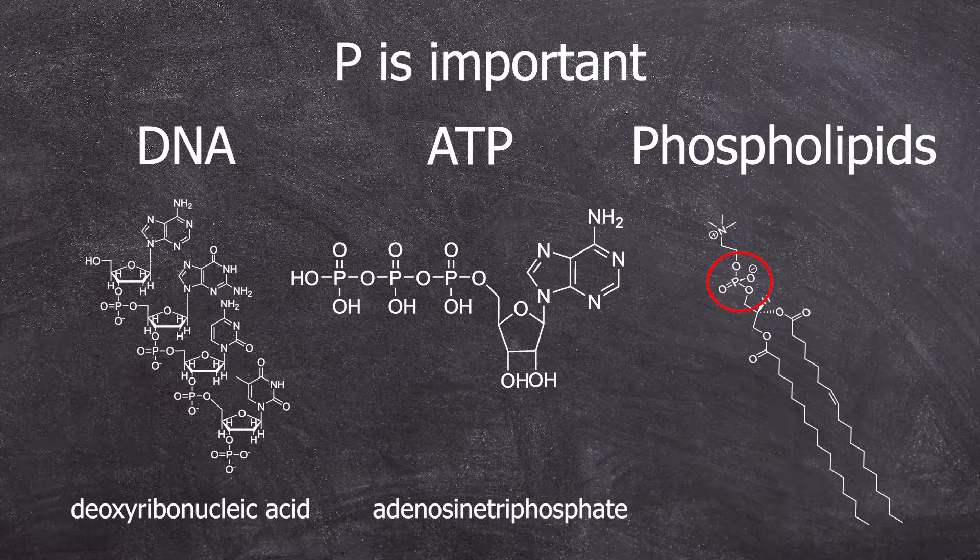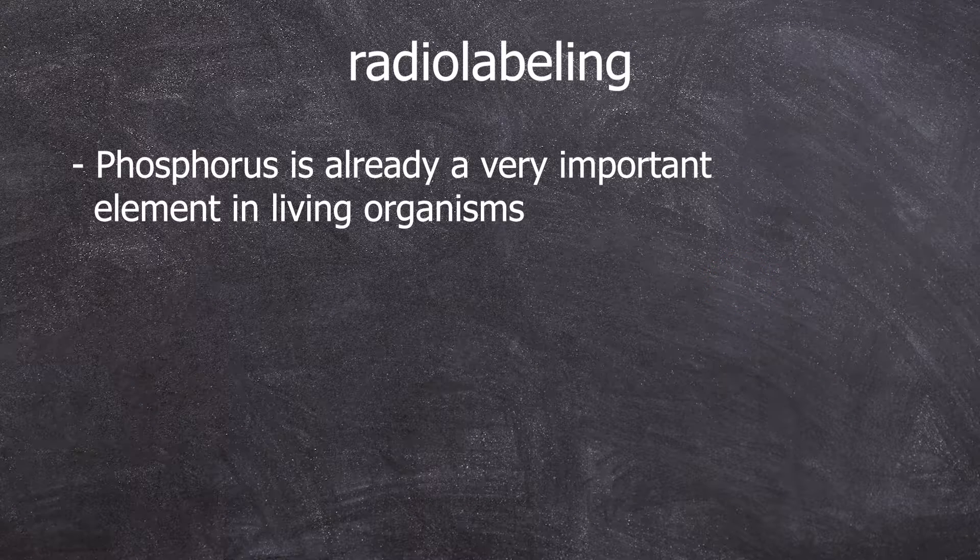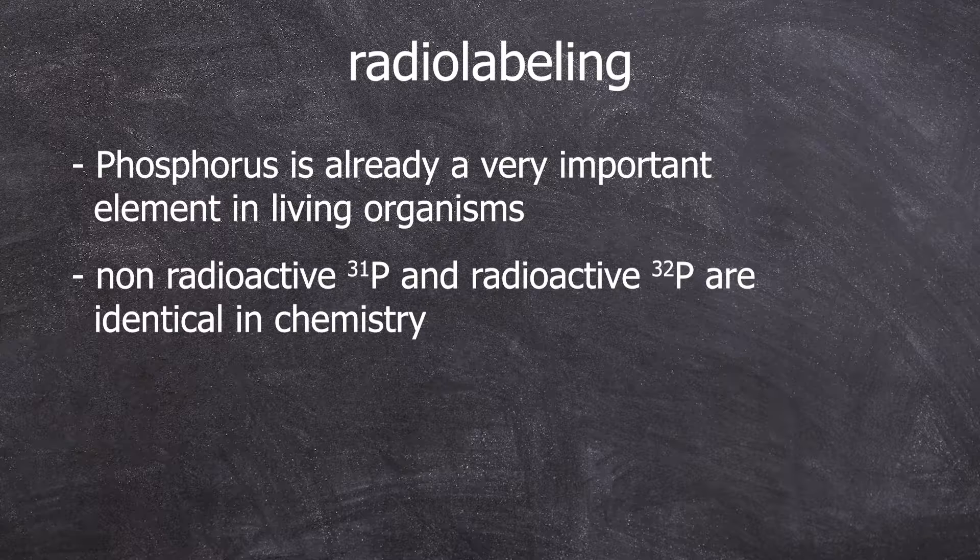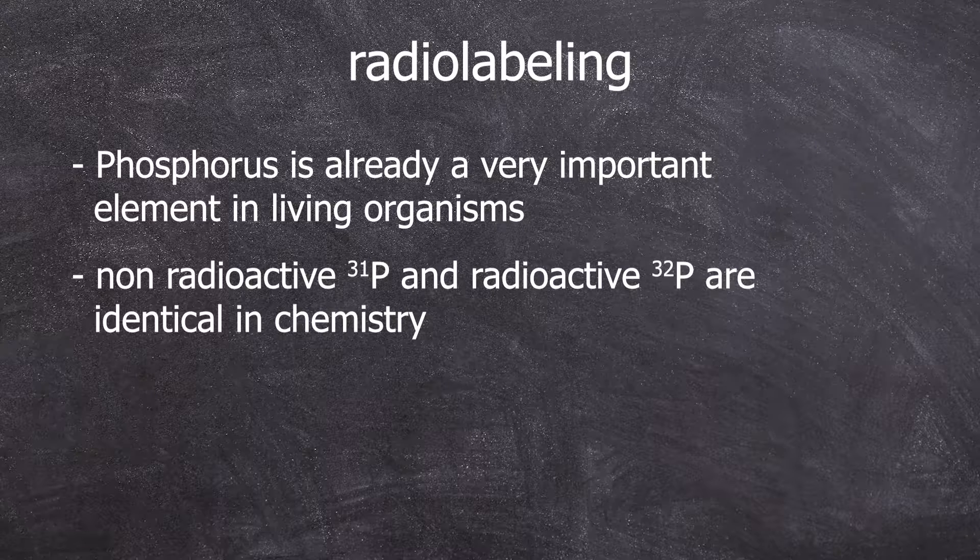And it's precisely this biological importance that can be leveraged by using radioactive Phosphorus 32, which is chemically identical to normal Phosphorus 31. And thus, it signals through radiation what happens with phosphorus in the context of metabolic processes.